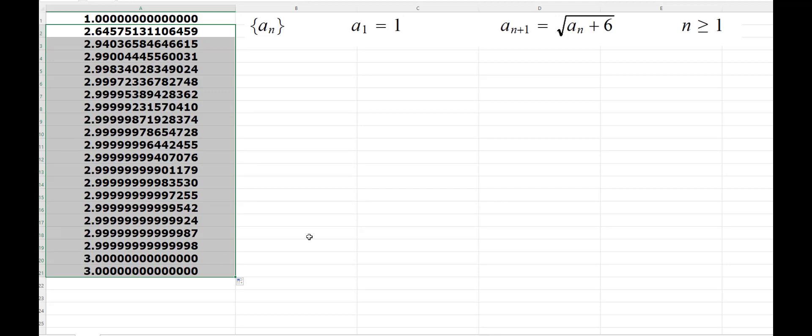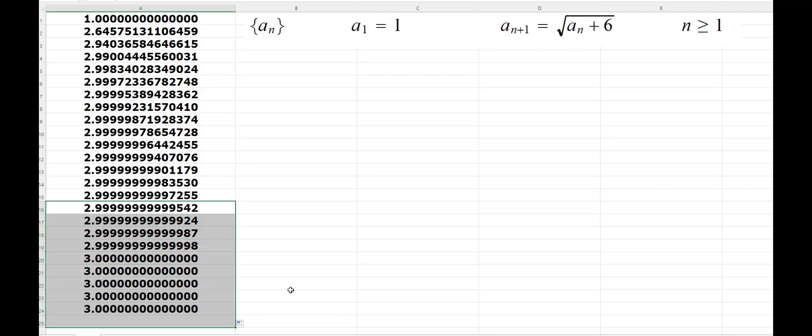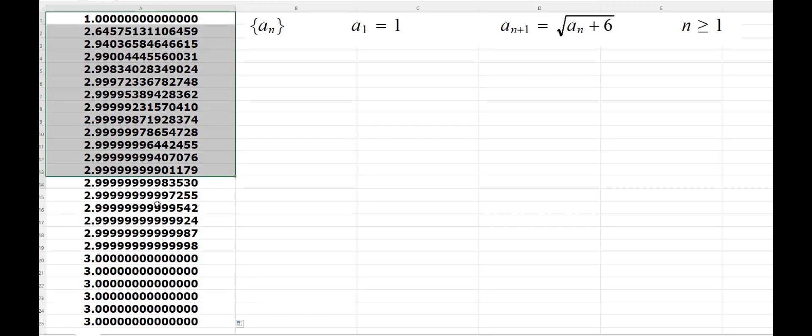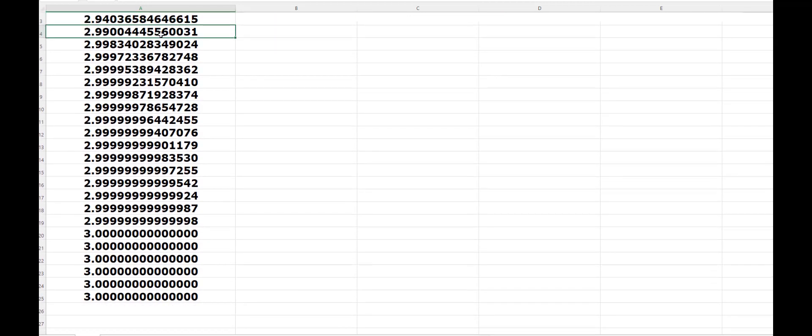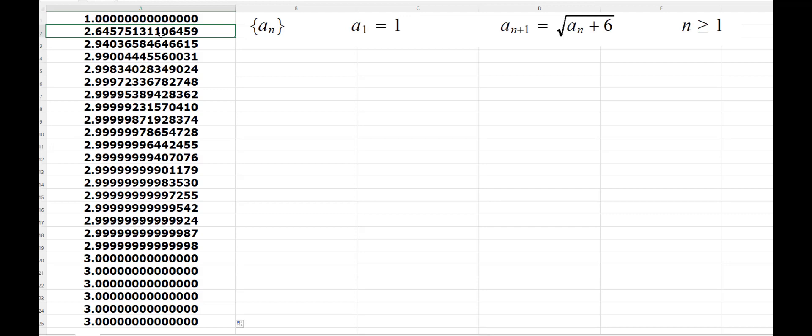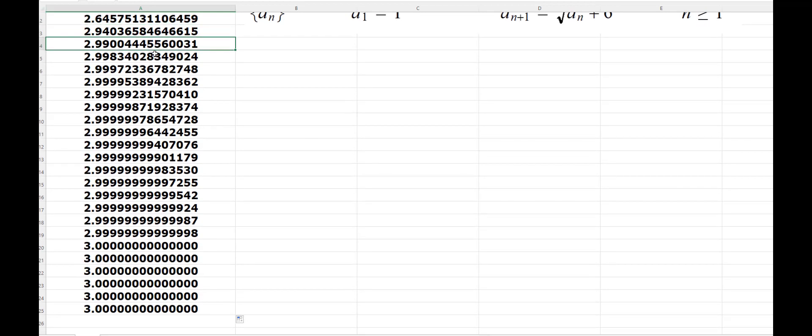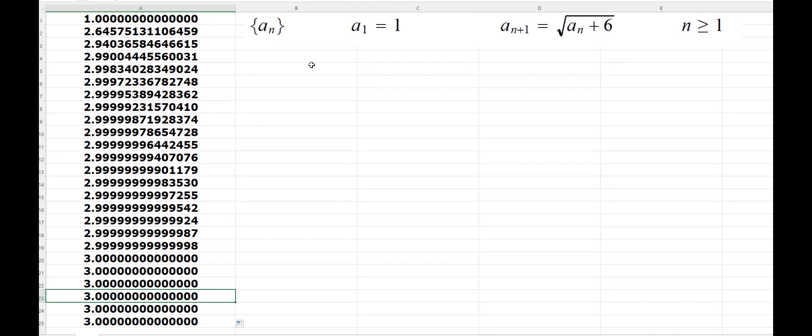So what you see is that this sequence, if we just go further down, this suggests that it's going to converge to three pretty fast. And you will also notice that the sequence is an increasing sequence, that is, the values are increasing. And also it appears to be no more than three or the sequence is bounded by the number three.